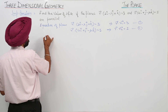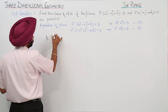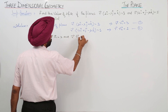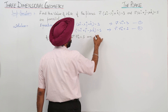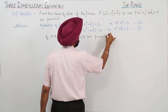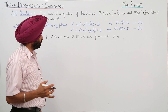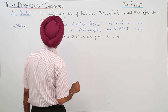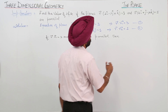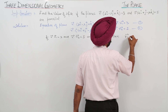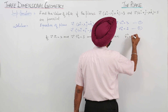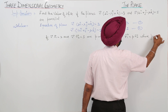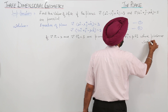If vector r dot vector n1 equals 3 and vector r dot vector n2 equals 5 are parallel, then by the condition of parallelism, vector n1 must equal p times vector n2, where p is some scalar.